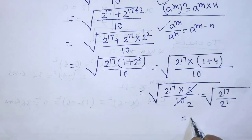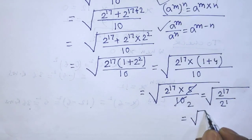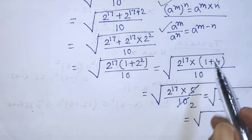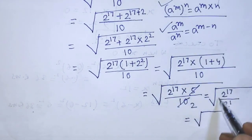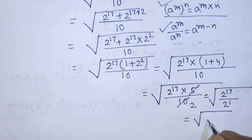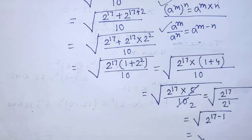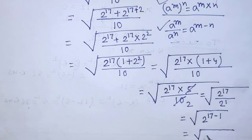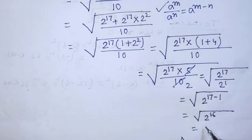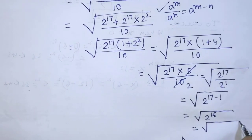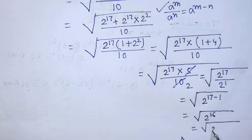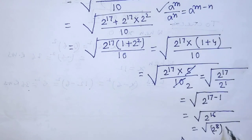So after that, again we have to write square root, and inside this square root, according to the formula, we get from this algebraic expression 2 to the power 17 minus 1. So it will be square root of 2 to the power 16. After that, we can write square root of 2 to the power 8, whole to the power 2.